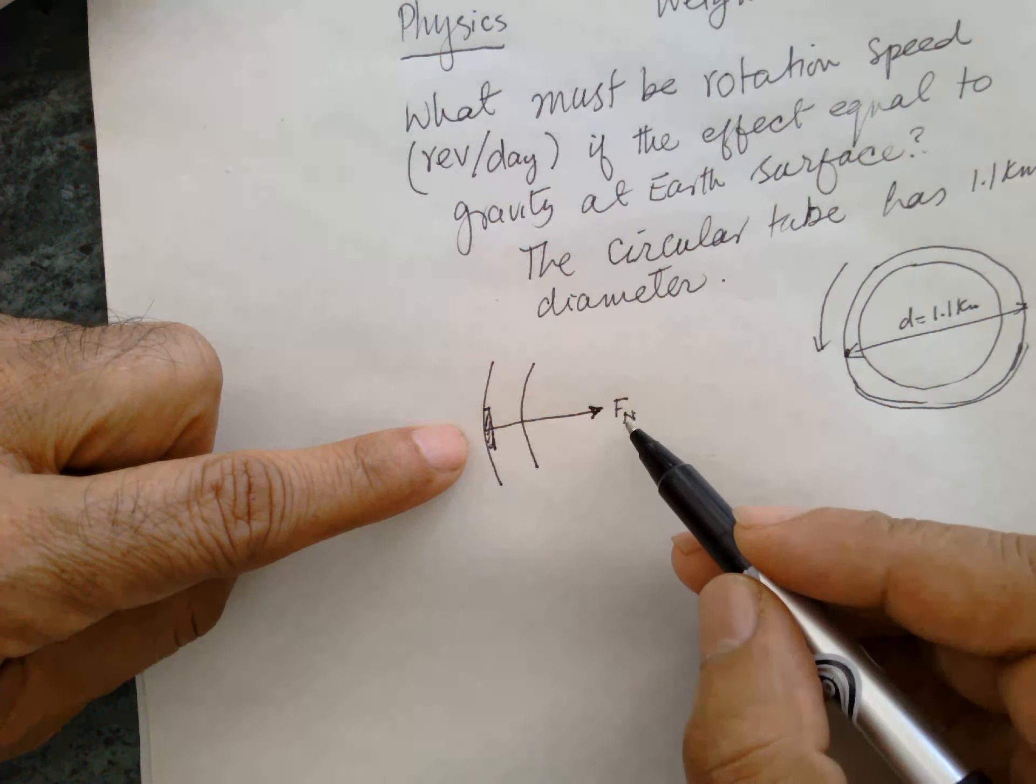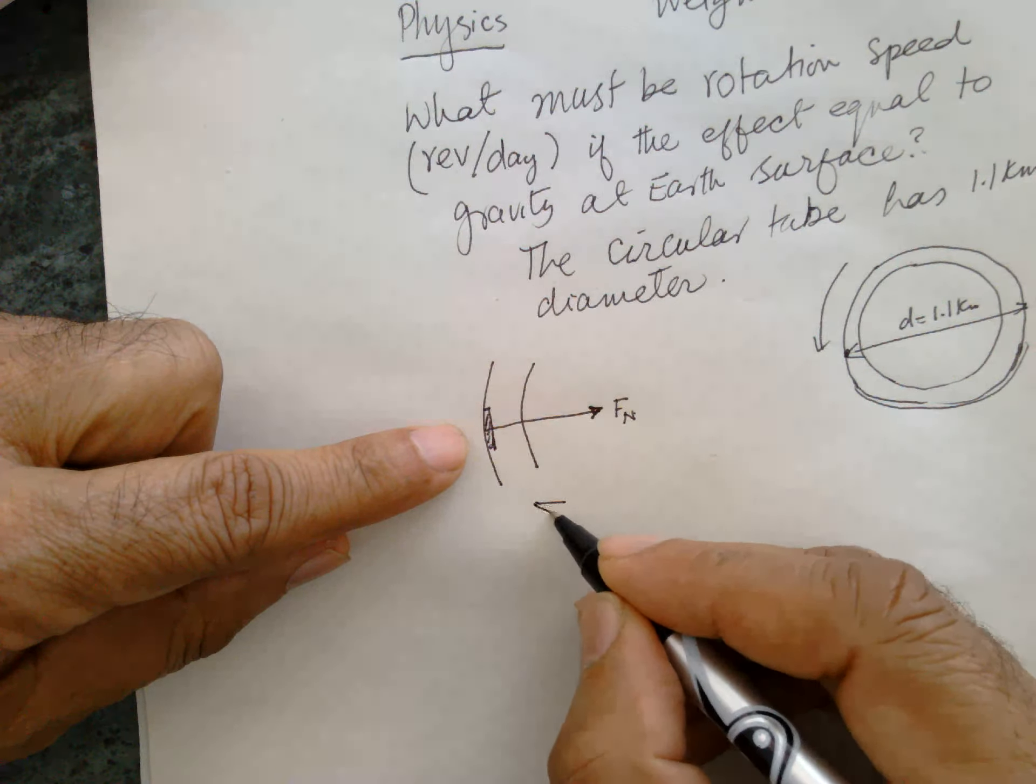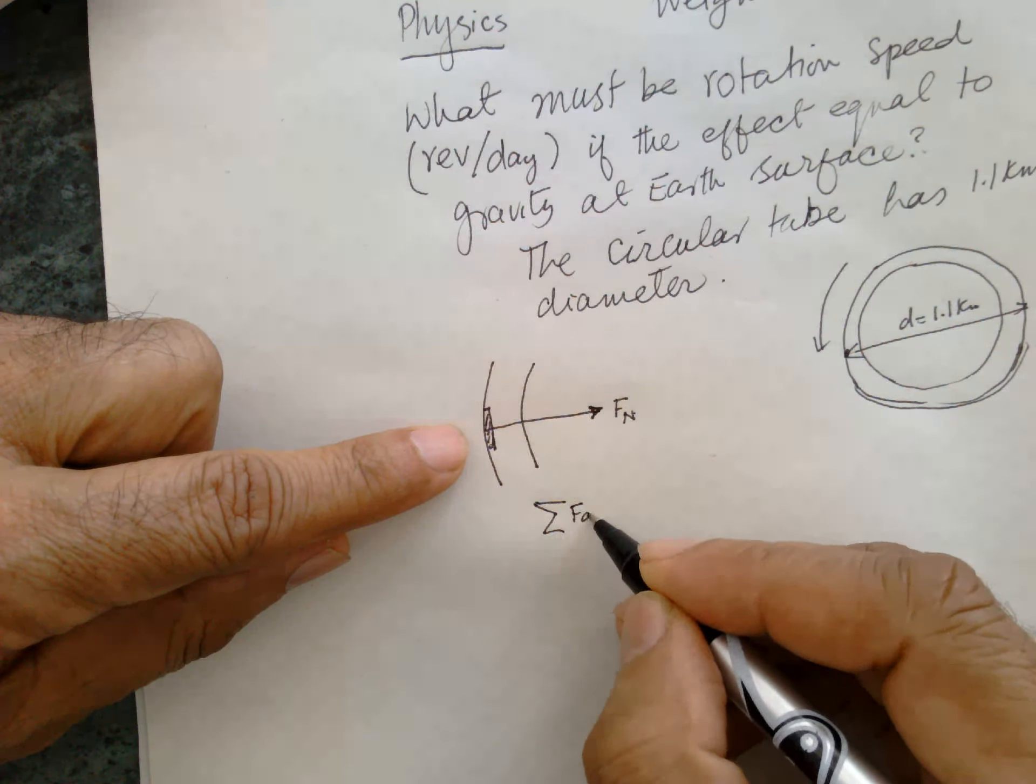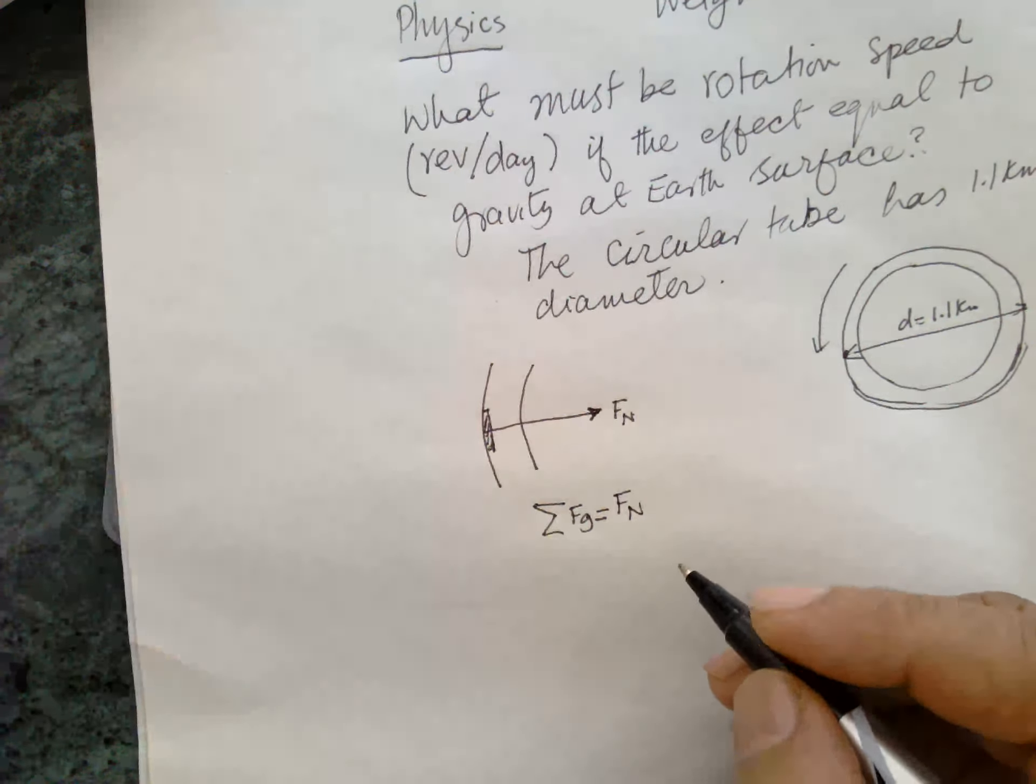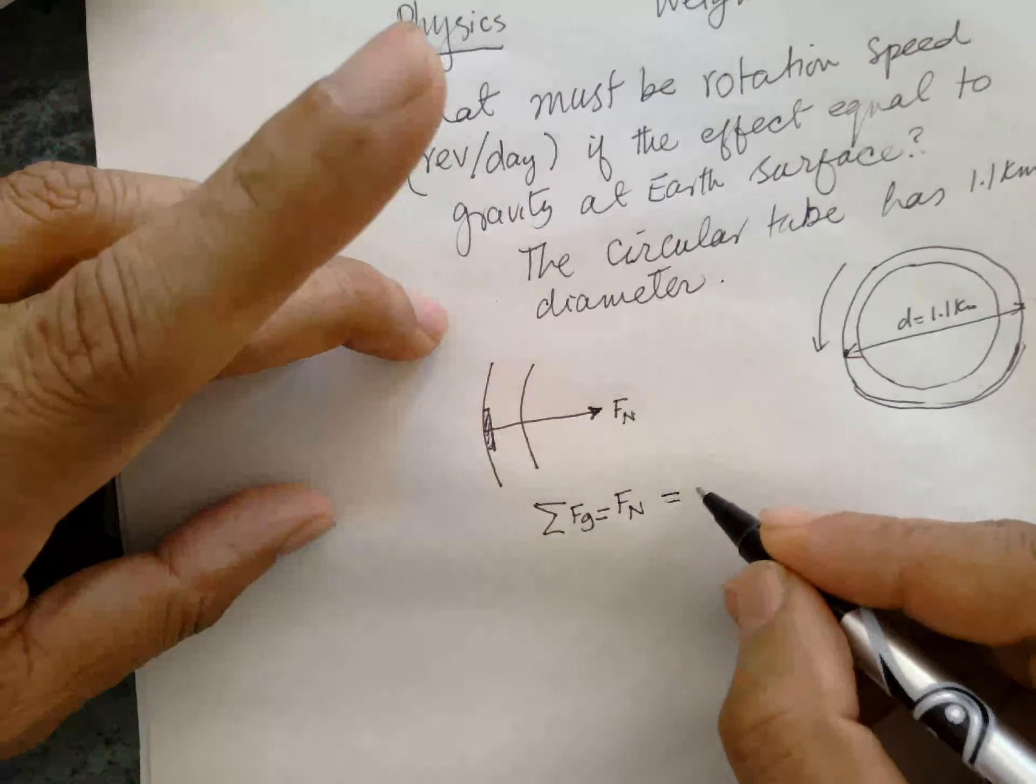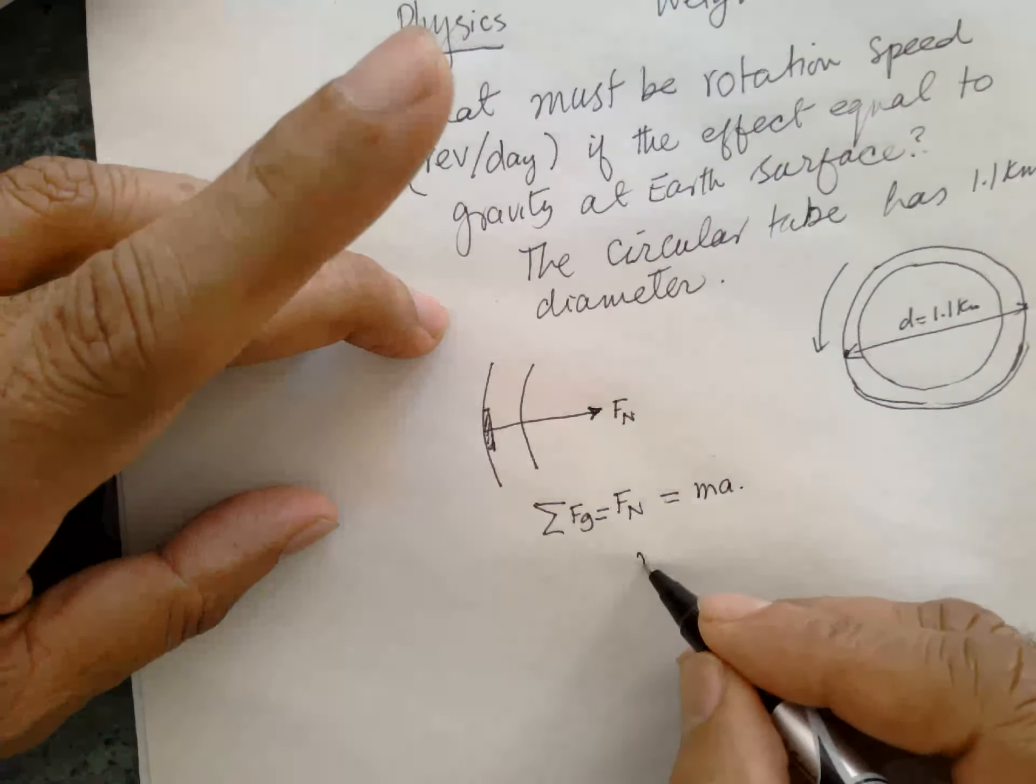So sum of Fg, which is equal to Fn, and this is equal to according to the second law, which is equal to MA. So A is MG.